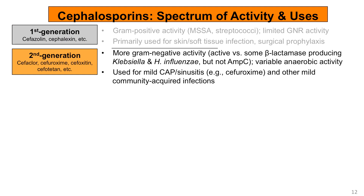The second generation cephalosporins have slightly more gram-negative activity than the first generation. They are actually active against some beta-lactamase-producing organisms, such as Klebsiella and Haemophilus influenzae, but not those that produce AmpC types of beta-lactamases, as discussed in the part one video. These agents also have variable anaerobic activity, and are primarily used for mild community-acquired pneumonia, sinusitis, and other mild community-acquired infections.